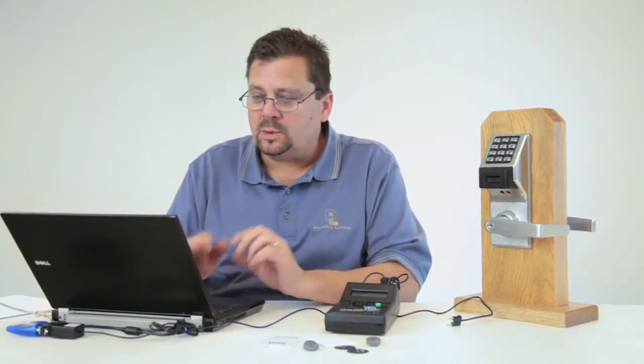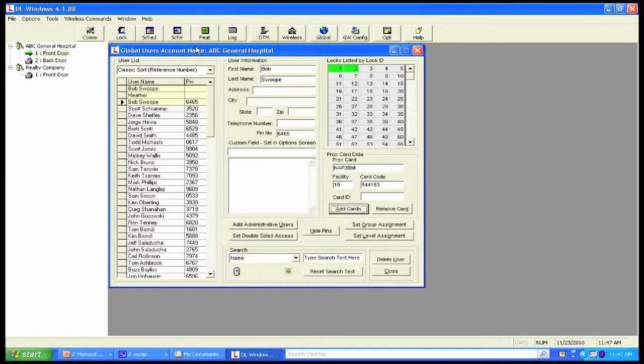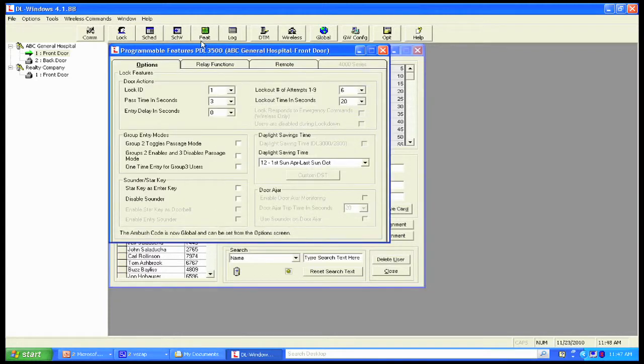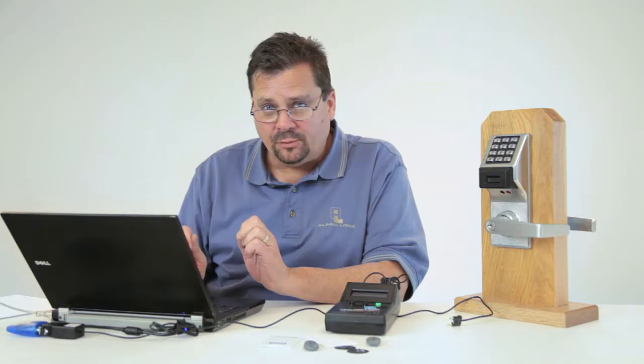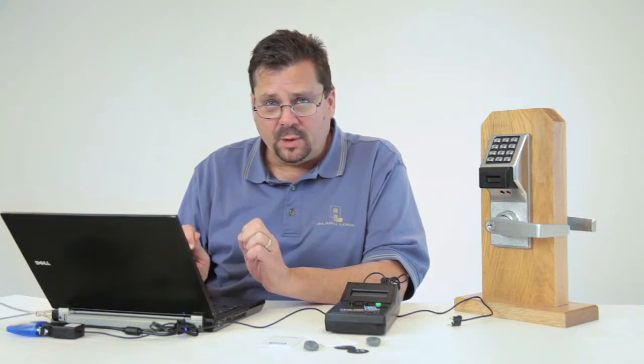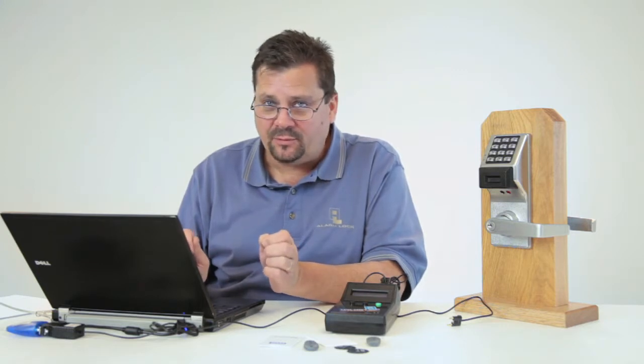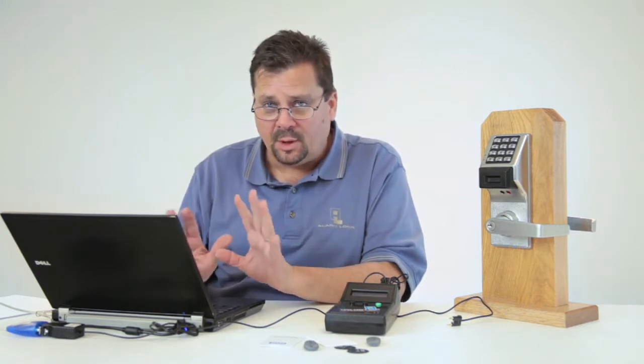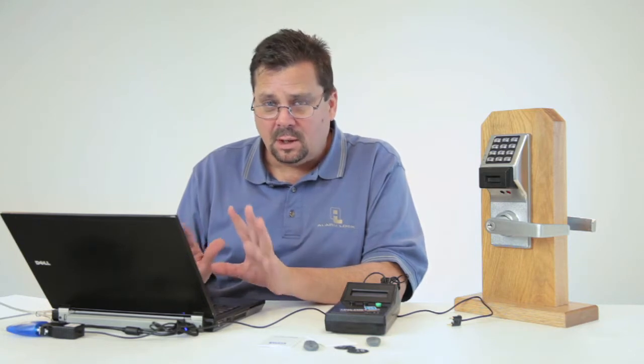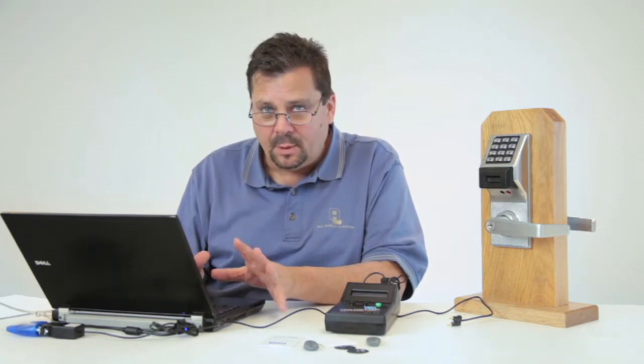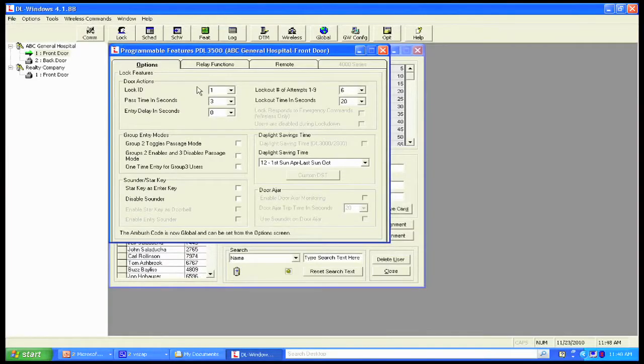First, we want to show you these two icons: the feature screen. The feature screen is the programmable features of a particular lock, and these are lock-by-lock specific. So for each feature screen, I've got to open up each individual lock. Another reason why we clone locks. When you create that very first lock, you set up all the features, all of the options, all of the schedules, all of the people, and then I clone everybody.